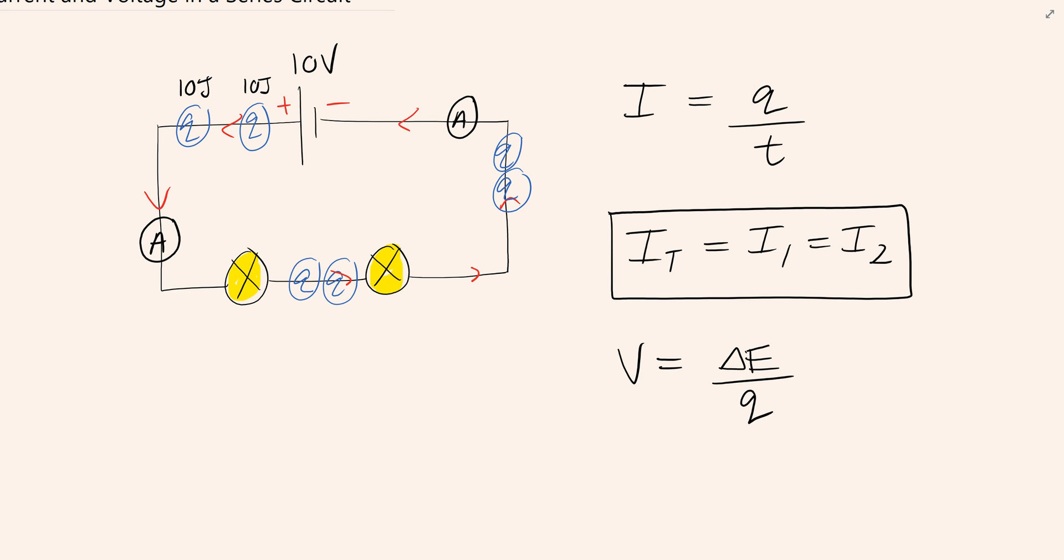Now if those lamps are identical in terms of resistance, then they're going to have to give up or share that energy equally between those two lamps. So in that case, it would be both 5 joules to each lamp.